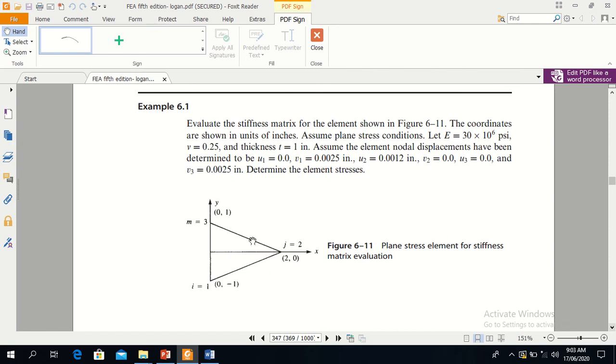For which you will have to find the stiffness matrix, the coordinates are shown for the three nodes. These are the three nodes: i, j, and m.